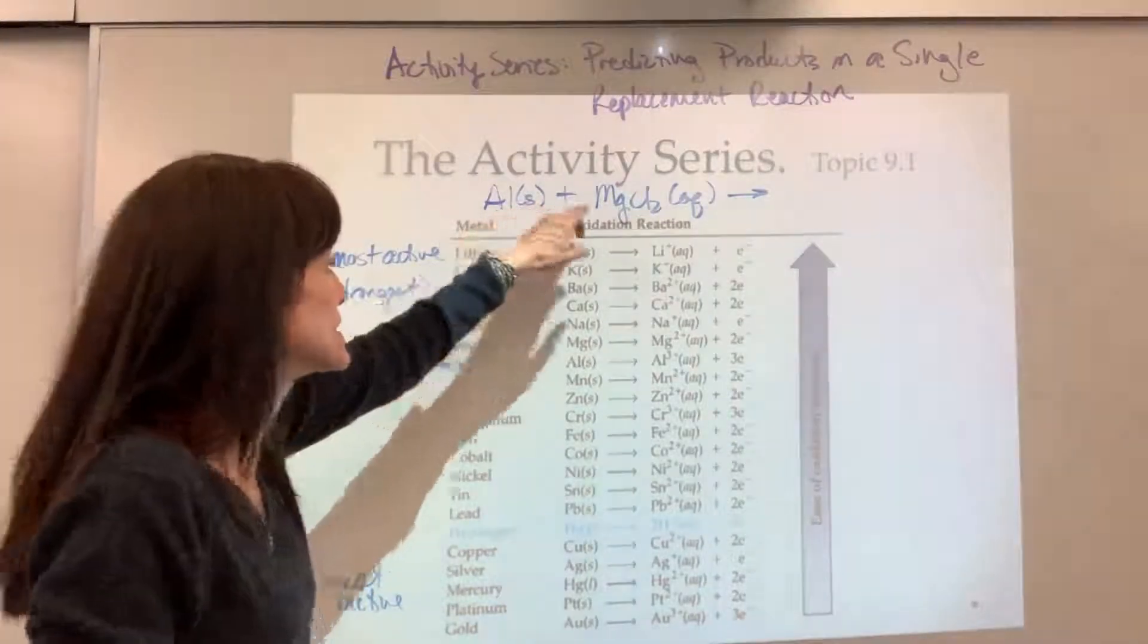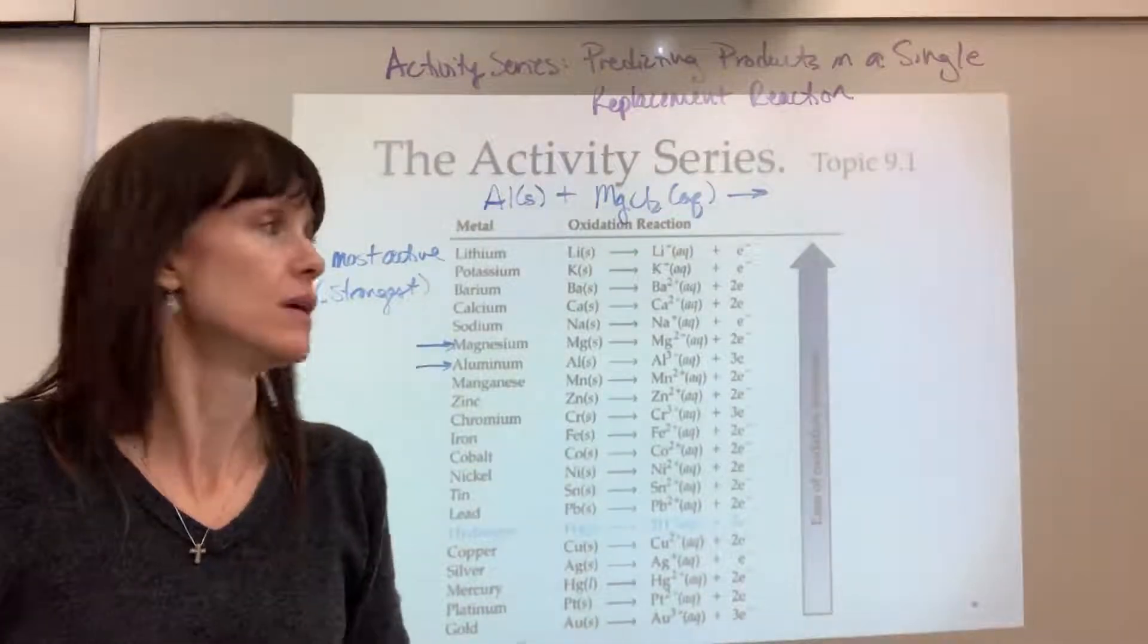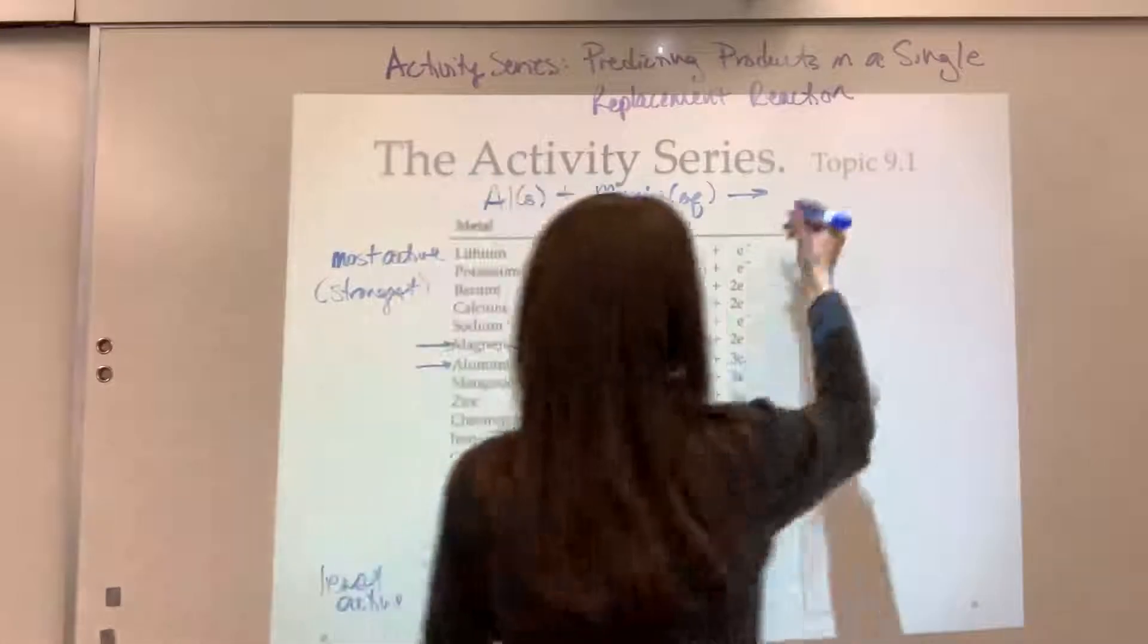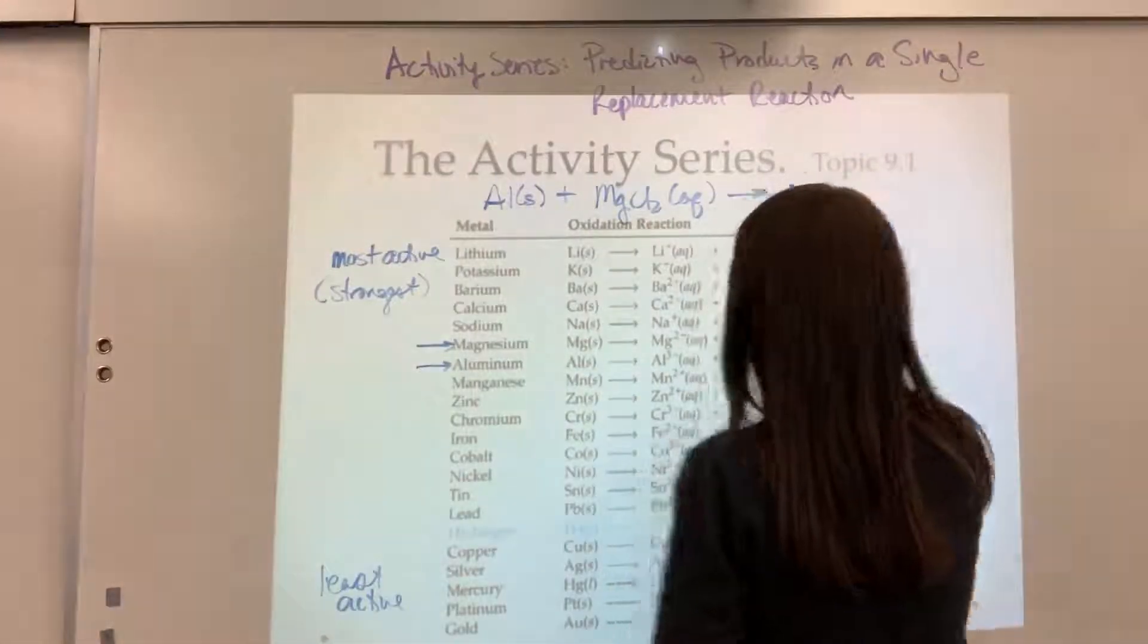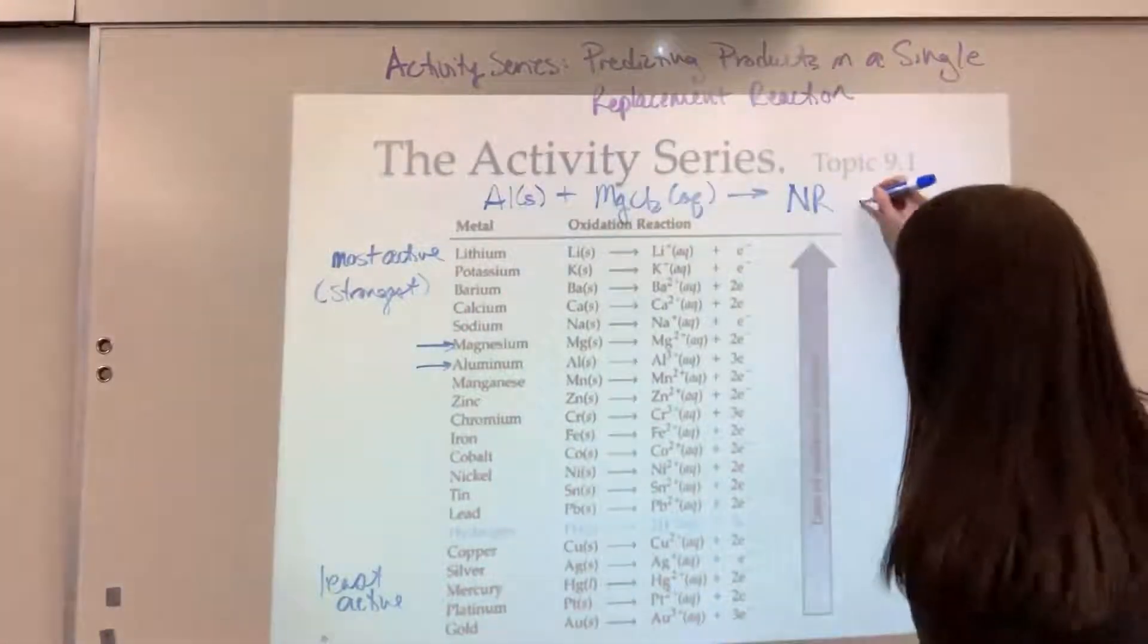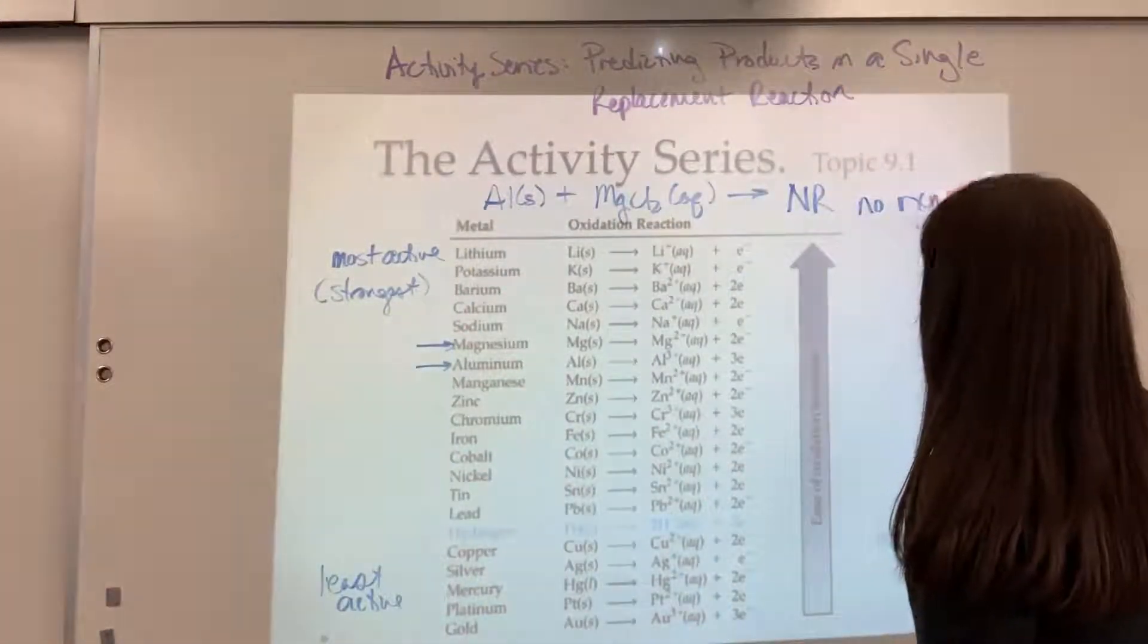Oh wait, aluminum is less active, it's not as strong. The aluminum does not have the ability to kick off that magnesium. You're going to love this - easiest reaction ever. You're right. NR, no reaction. It won't react.